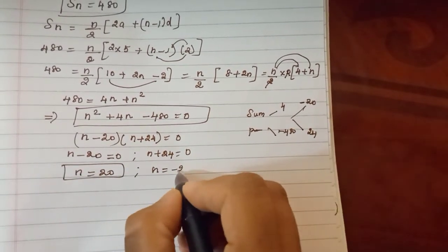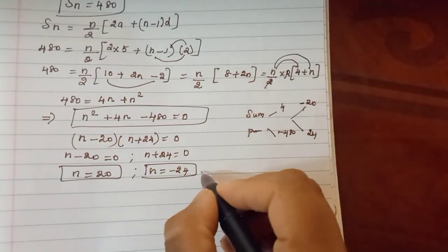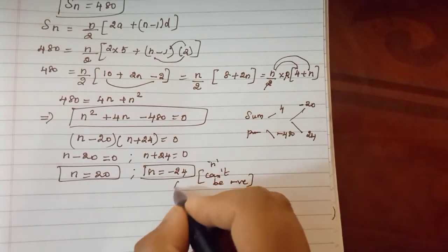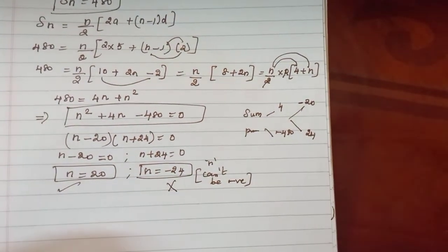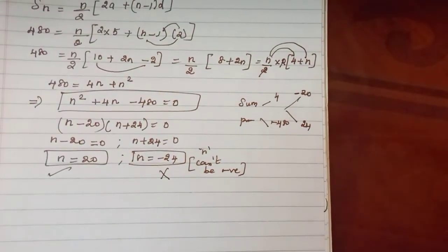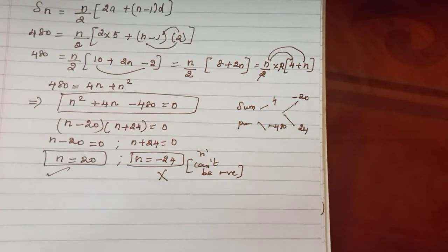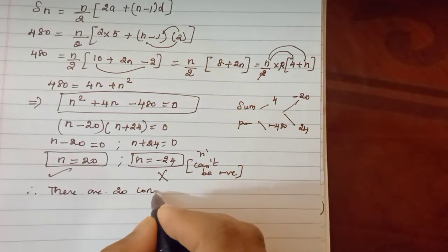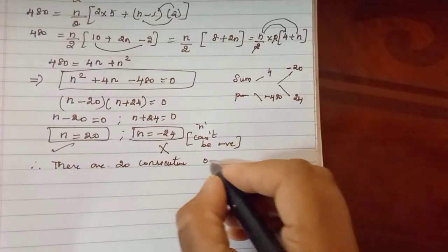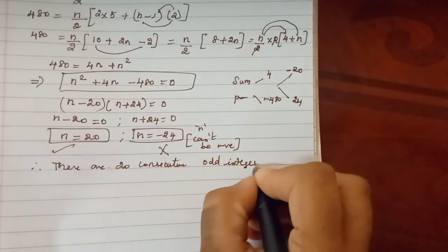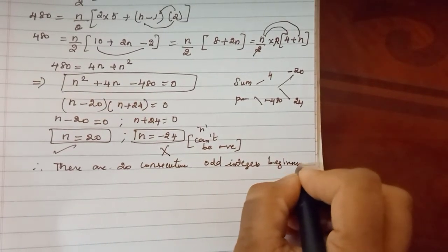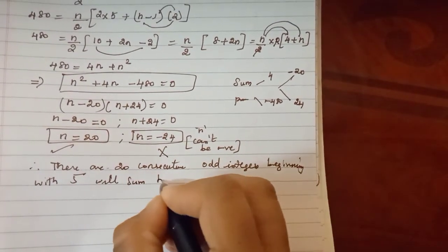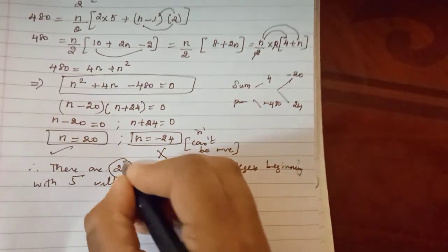So each term gives us the answer. How many consecutive odd integers beginning with 5 will sum to 480? Therefore, there are 20 consecutive odd integers beginning with 5 that will sum to 480. The answer is 20.